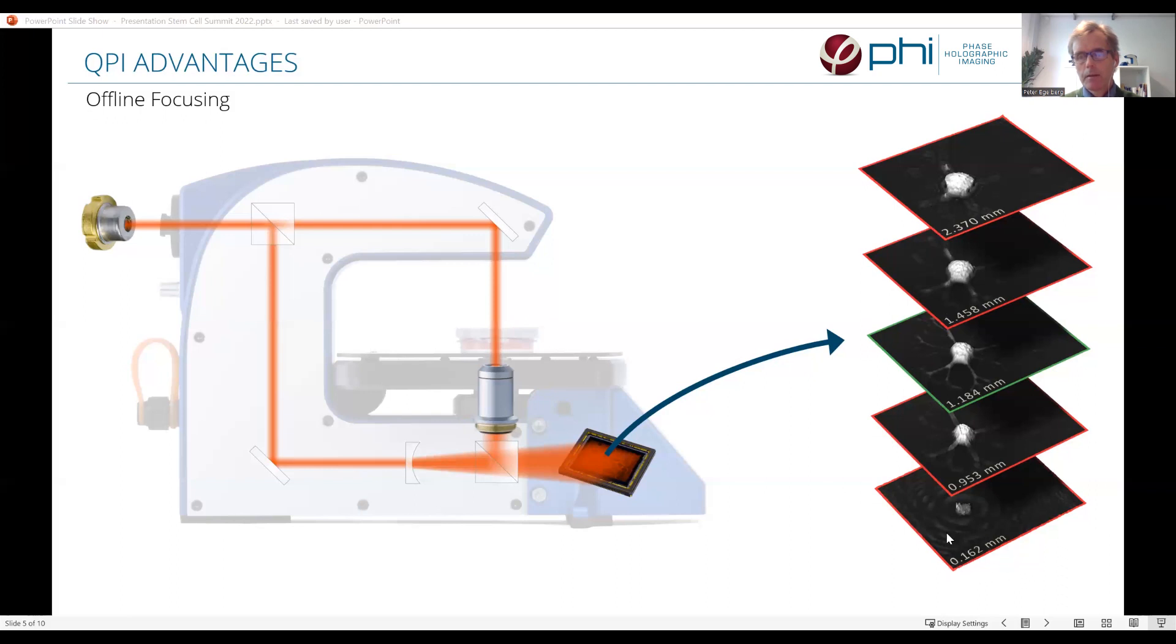And here you can see what it has been set to when these images have been created by the software. At the bottom, the focus is out of focus and it gradually comes into focus when the parameter in the software is changed. And then, of course, when the parameter is changed too much, the cells will, or the cell in this case, will be out of focus.